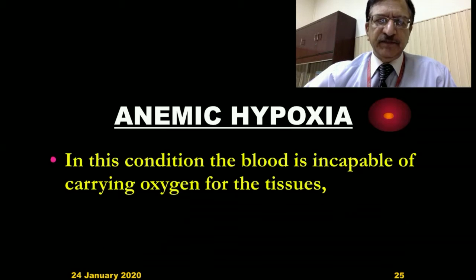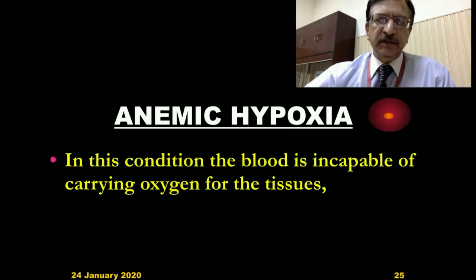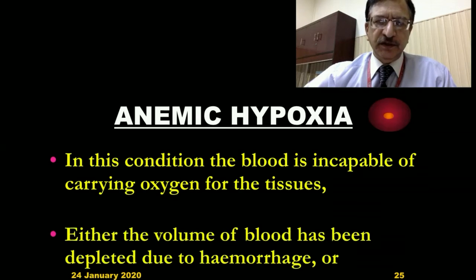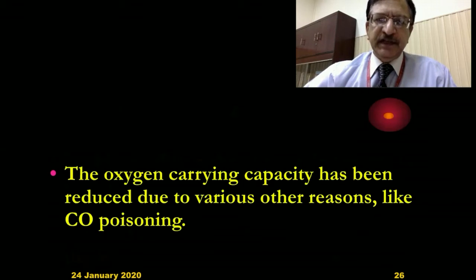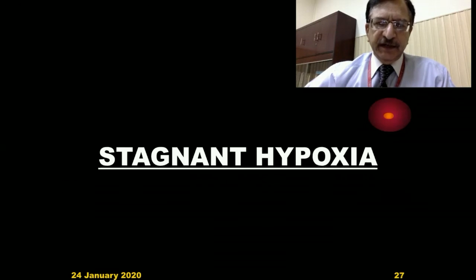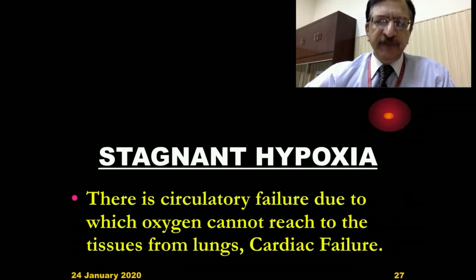Anemic hypoxia is where the blood is incapable of carrying oxygen to the tissues — there is deficient capacity of the blood to carry oxygen. Either the volume of blood has been depleted by hemorrhage, or the oxygen-carrying capacity has been reduced due to various reasons like carbon monoxide poisoning or other diseases. Stagnant hypoxia is where there is circulatory failure due to which oxygen cannot reach the tissues from the lungs, like in cardiac failure.